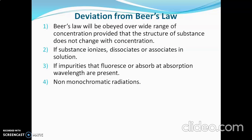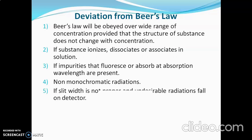If the radiations passing through the sample are non-monochromatic — that is, polychromatic — Beer's law will not be obeyed. If the slit width of the monochromator is not proper and undesirable radiations fall on the detector, Beer's law will not be obeyed — polychromatic light reaching the detector gives wrong results. If the sample undergoes polymerization, Beer's law will also not be obeyed.